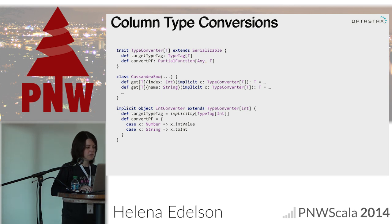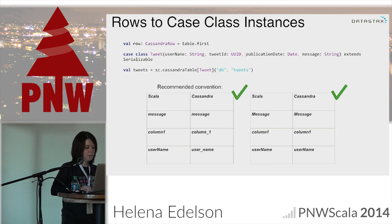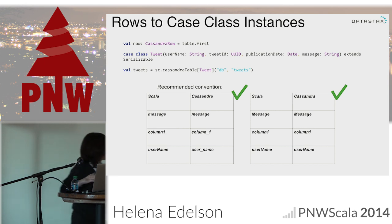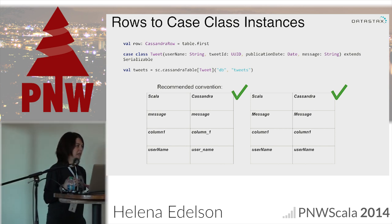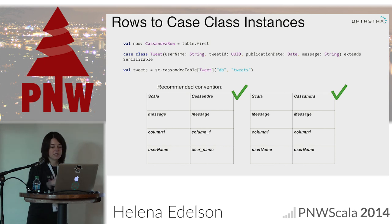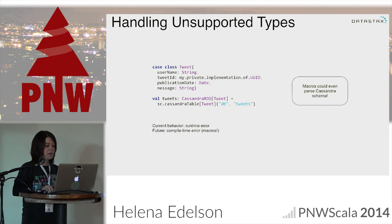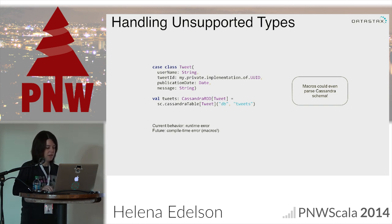A lot of type conversions are handled automatically — you can use any case class, everything just needs to be serializable for Spark. It does all the transformations for you. Say case class Tweet as my own case class; then I call cassandraTable with my keyspace and table, pass in the type, and if all fields are mapped to that case class, that's all you have to do — the connector does the rest. You can also map things to tuples, and there's a small API for handling unsupported types. The connector is at datastax/spark-cassandra-connector on GitHub, currently at 1.1.0 beta 2.